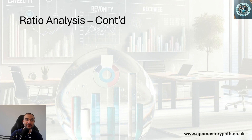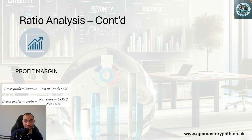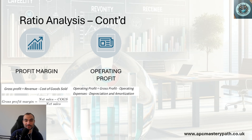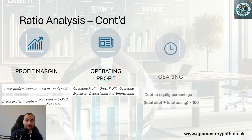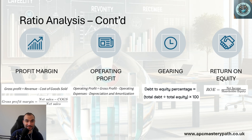We'll highlight four specific ratios. First, profit margin: calculated by deducting the cost of goods sold from overall revenues to get gross profit, then expressing that as a ratio to overall revenues. Second, operating profit: deducting operating expenses from gross profit, taking into account depreciation and amortization. Third, gearing: comparing how much a firm borrows relative to the net worth of that firm. Fourth, return on equity: calculating the ratio between the net profit the business achieves compared to the net worth of the business.